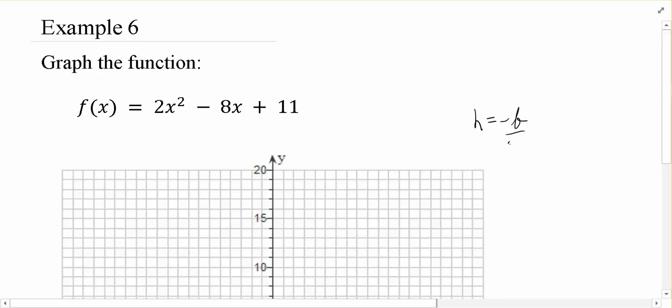To do that, I'm going to take the opposite of b over 2a, which for this problem becomes positive 8 over 2 times 2 is 4. So, the x value of the vertex is 2.